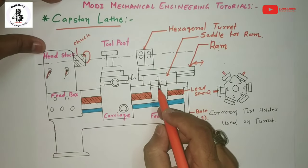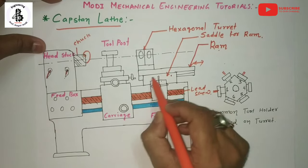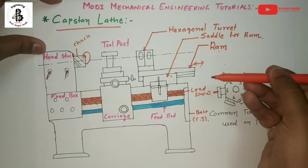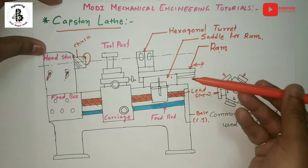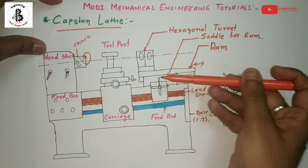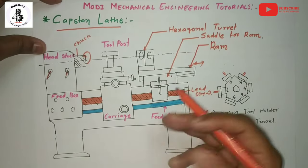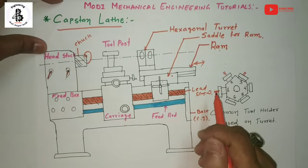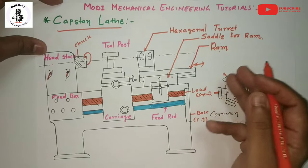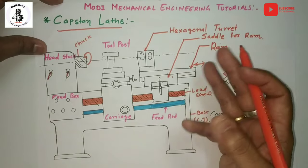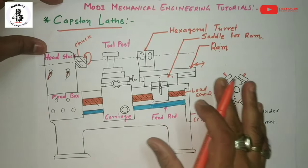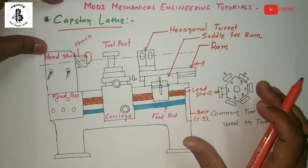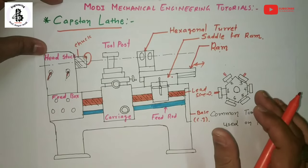In the capstan lathe machine the saddle is fixed anywhere on the bed, and the tool advances by the ram which slides on the saddle. Feed is applied with respect to the tool, and due to the ram sliding, the tool support unit is subjected to bending deflections, which results in vibrations. The capstan lathe is used for lighter, smaller size jobs for precision work, and the hexagonal turrets can be moved front and back more rapidly compared to the engine lathe or turret lathe, so tool traverse is faster. These are the features of capstan lathe machines, which have wide applications in mechanical engineering for precision work in the workshop.